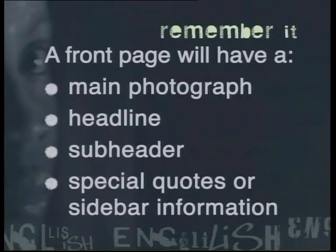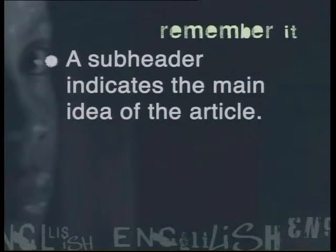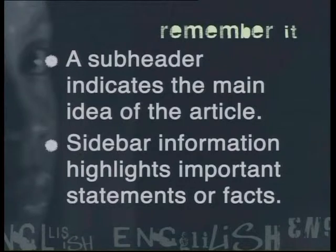This draws our attention to a particularly important part of the article. So let's recap the main ideas. A front page will have a main photograph, a headline, a subheader, and special quotes or sidebar information. They grab the reader's interest and deliver the most important information quickly. The main photograph grabs the reader's attention; the headline shows the reader what the main story is; the subheader gives the reader the main idea of the article; and special quotes or sidebar information tells the reader about any important statements or facts.